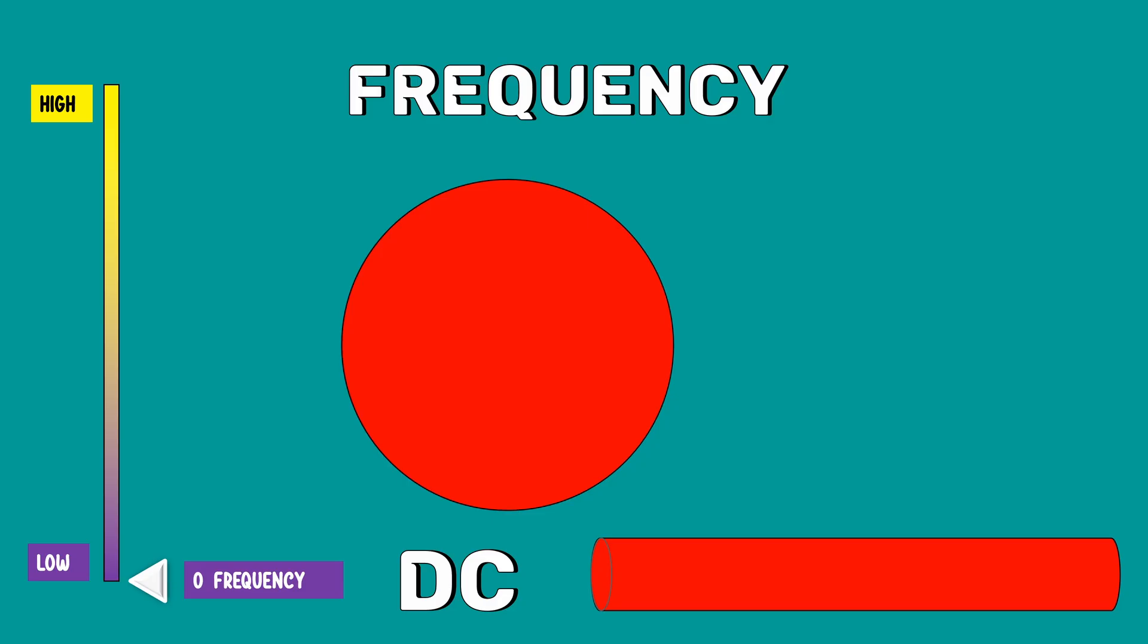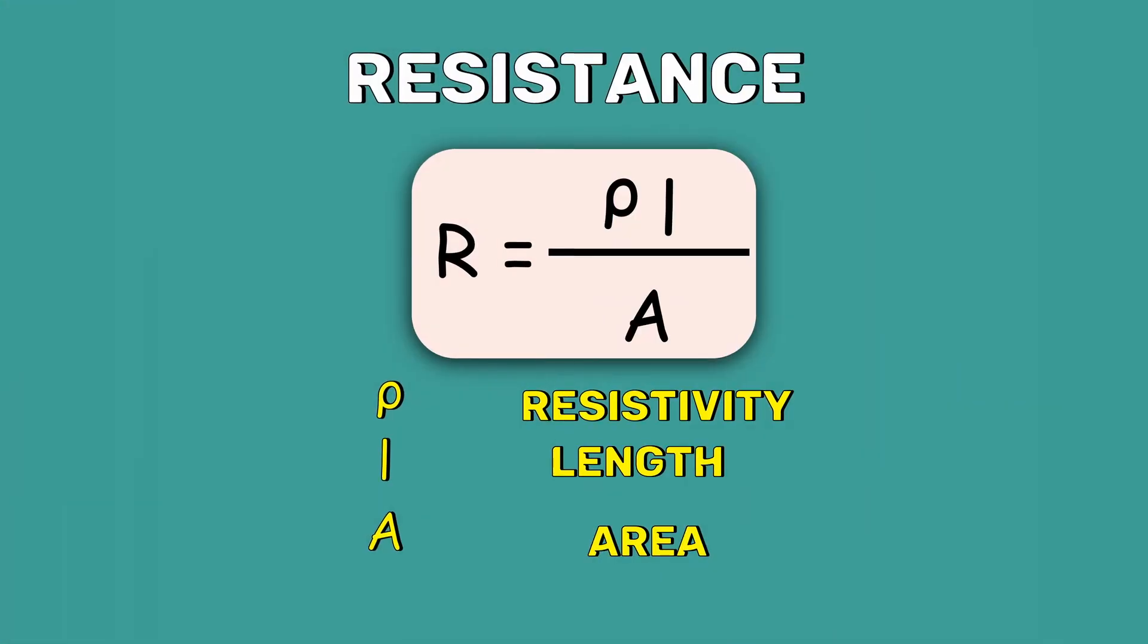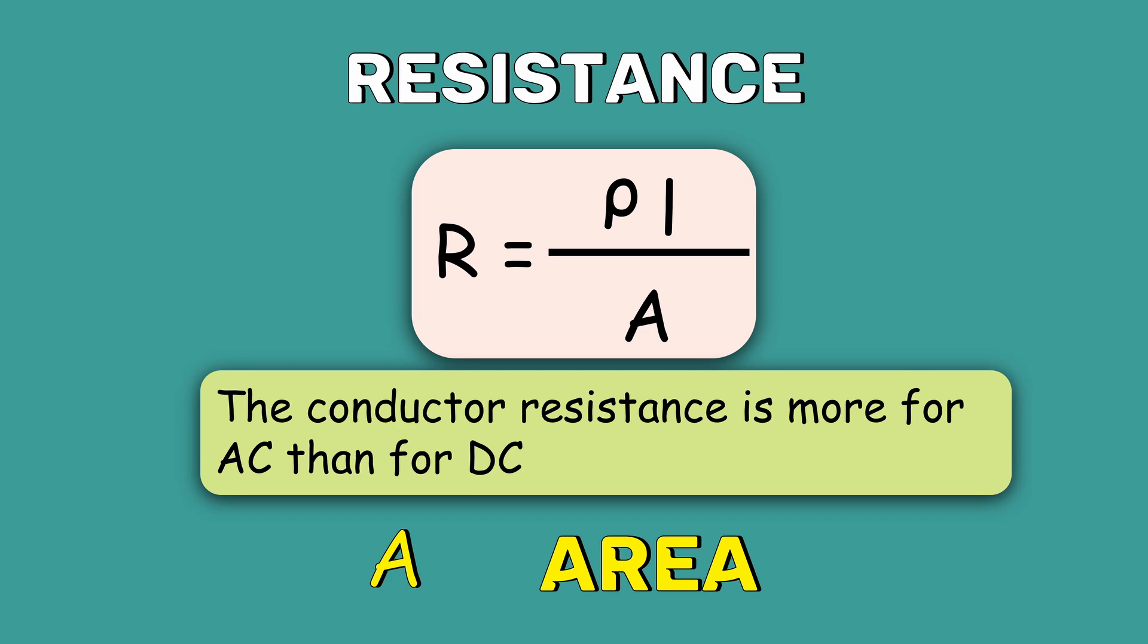Therefore, in DC, there is no skin effect. The useful cross sectional area or effective cross sectional area of the conductor will be more when the DC current flows through it and less when the AC current flows through it. Since the resistance of the conductor is inversely proportional to the area, the conductor resistance is more for AC than for DC. More resistance leads to more power loss.